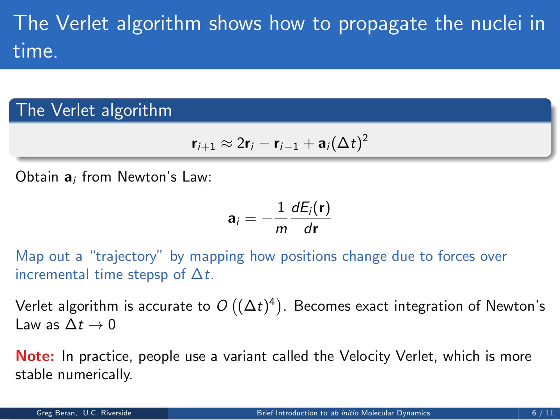The advantage of the Verlet algorithm compared to the simpler first Taylor series expansion is that it's accurate to delta T to the fourth power, because the delta T to the third power cancels, giving less numerical noise. In the limit of delta T going to zero, this would become an exact integration of Newton's laws, but in practice we'll have a finite delta T, so there will be some error. In actuality, people don't usually use the Verlet algorithm these days — they use a variant called the velocity Verlet, which has slightly better numerical properties, but the ideas are similar.